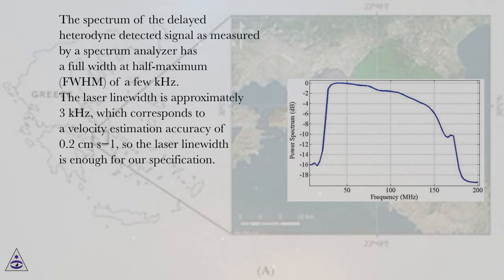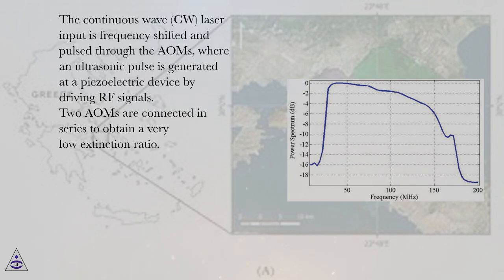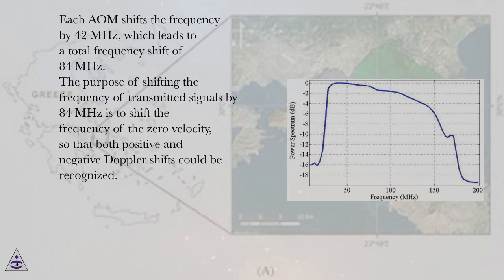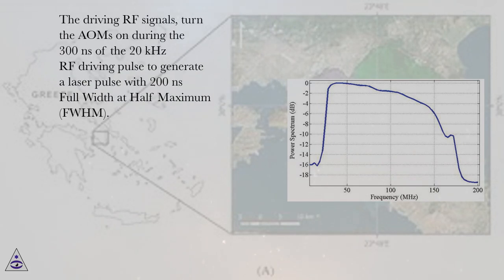The continuous wave (CW) laser input is frequency-shifted and pulsed through the AOMs, where an ultrasonic pulse is generated at a piezoelectric device by driving RF signals. Two AOMs are connected in series to obtain a very low extinction ratio. Each AOM shifts the frequency by 42 MHz, which leads to a total frequency shift of 84 MHz. The purpose of shifting the frequency of transmitted signals by 84 MHz is to shift the zero-velocity frequency so that both positive and negative Doppler shifts can be recognized. The driving RF signals turn the AOMs on during 300 ns of the 20 kHz RF driving pulse to generate a laser pulse with 200 ns full width at half maximum (FWHM).